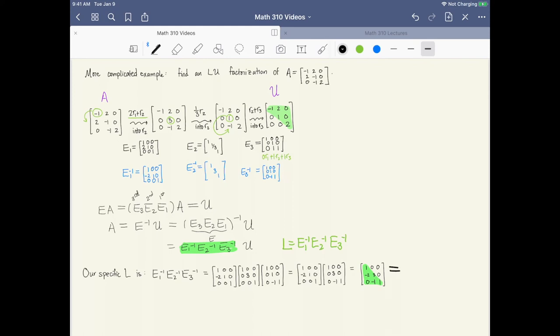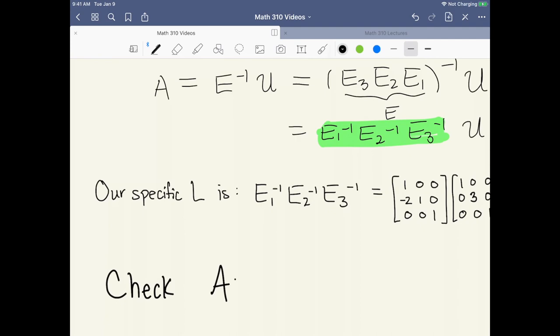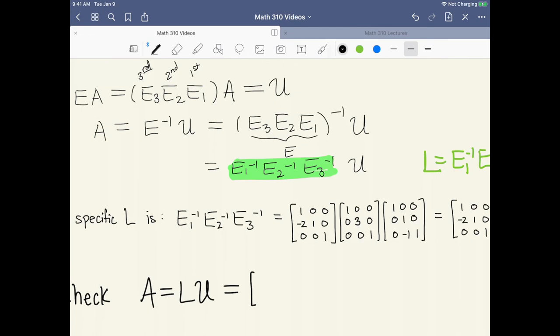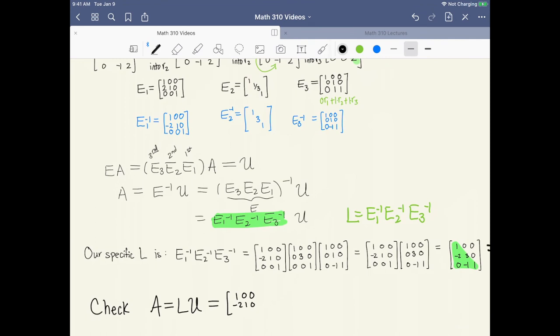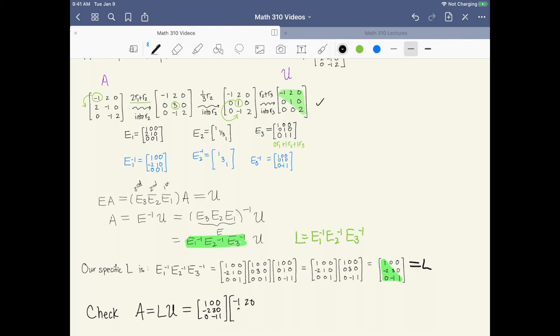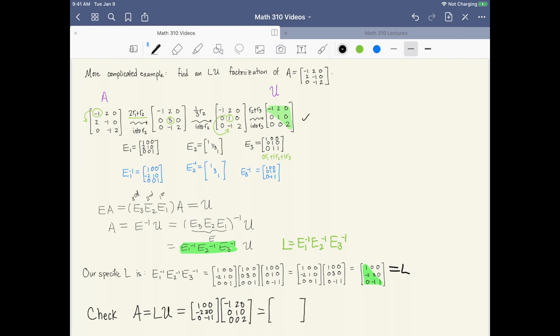And now we have our matrix factorization. We can check, and I recommend in these problems that you always multiply it back out to make sure you get the matrix A. We should check that A is really equal to the LU that we say it is. Our L is this matrix [-1, 0, 0; -2, 3, 0; 0, -1, 1]. The matrix U that we found in the first step is [-1, 2, 0; 0, 0, 0; 0, 0, 2]. And multiplying these two matrices together checks out to give you the entries of our original matrix A. So it does work out.